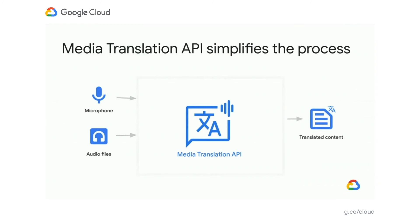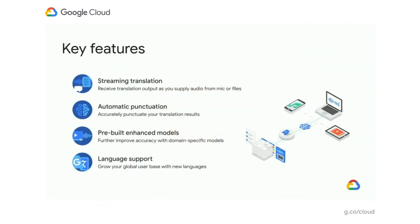Media Translation API simplifies this process. It supports directly audio files or a microphone input — say, through a mobile phone or your browser — and accepts that content directly, so you're not having to run through a speech model first and then a translation model. You can go directly to Media Translation API with your audio and get back a text translation in your target language. In addition to abstracting away the friction of multiple API calls, it offers automatic punctuation detection and enhanced models for video or telephony use cases to get the best quality for your audio translation outputs. Language support includes French, German, Italian, Hindi, Portuguese, Russian, Spanish, English, and others.